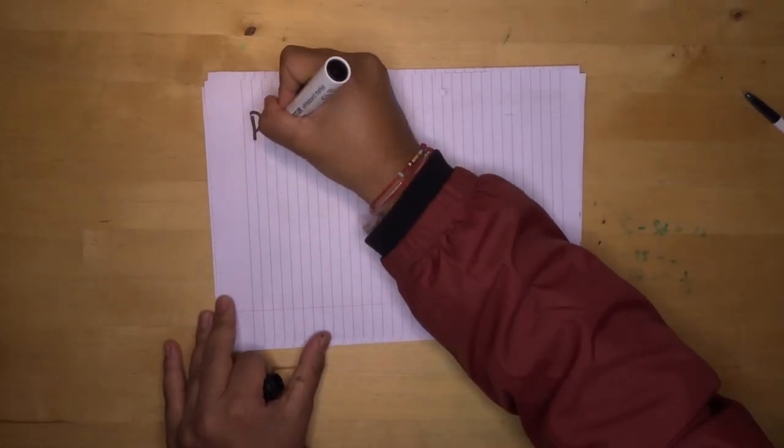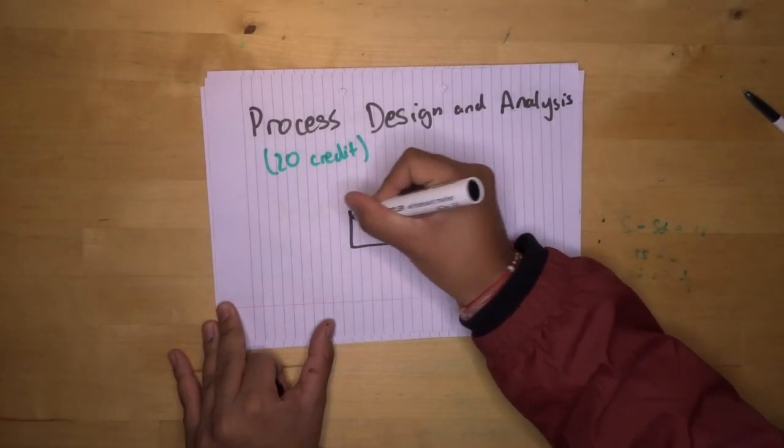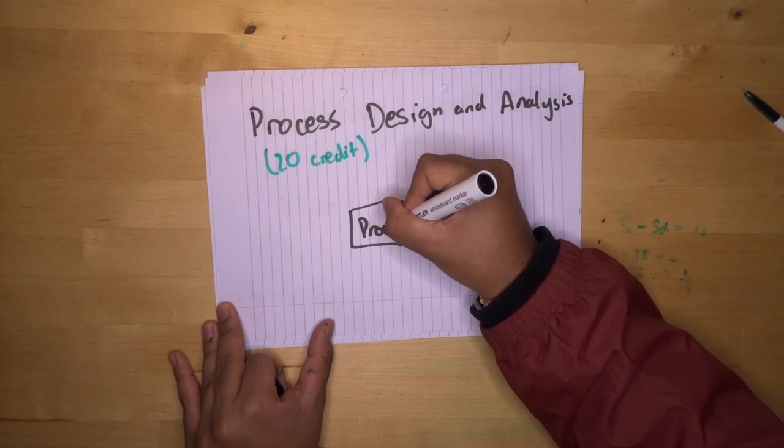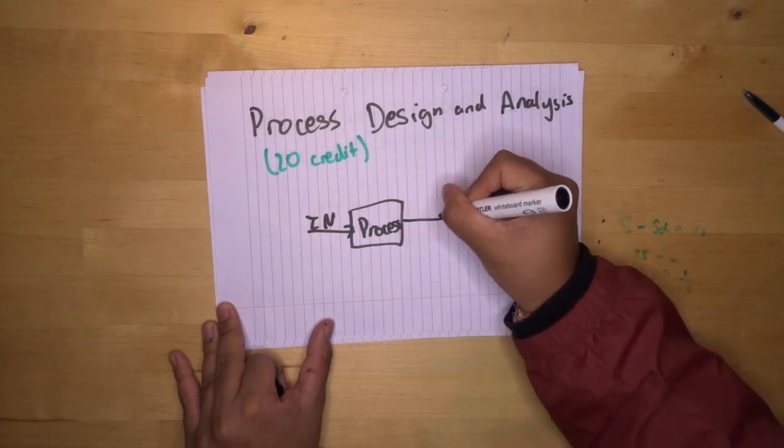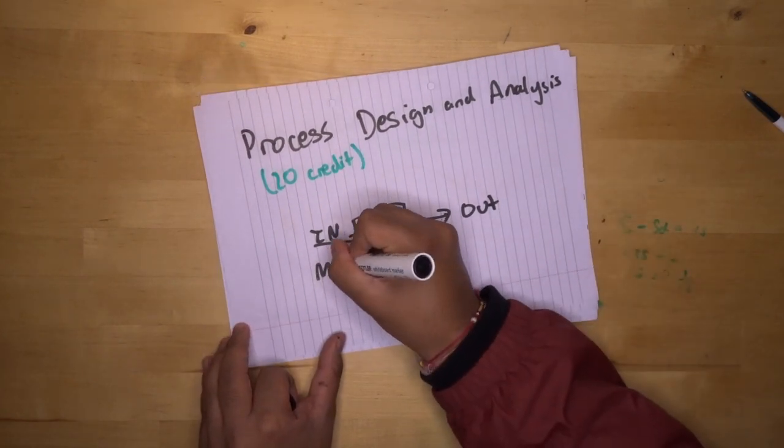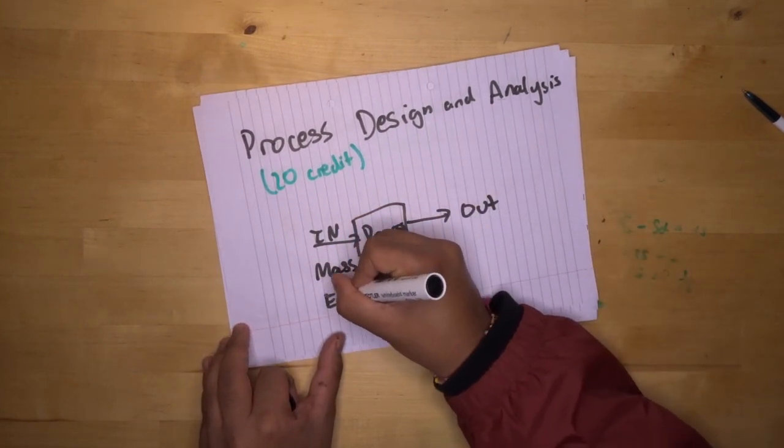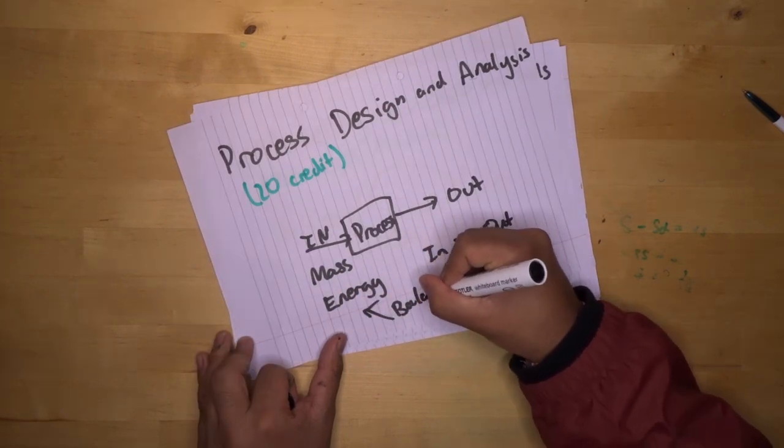The next module is process design and analysis. This is a 20 credit module. It teaches you the foundation skills in designing your own process plants. And it also teaches you the skills required to simulate your process plant in the basic level to keep track of all mass and energy going in and out of your system. They do this by teaching you about mass and energy balances.